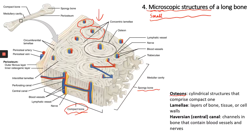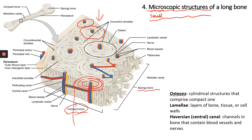If I have to draw the entire osteon, it would be kind of like a cylinder going down all the way to the end of the bone. This is again the structural unit of compact bone.